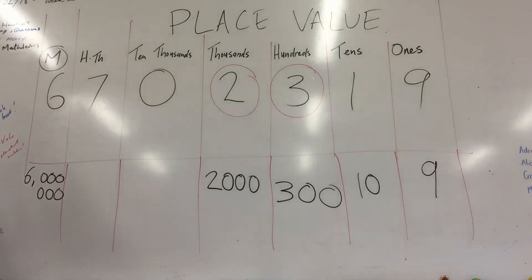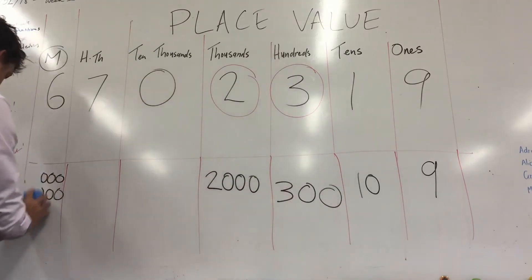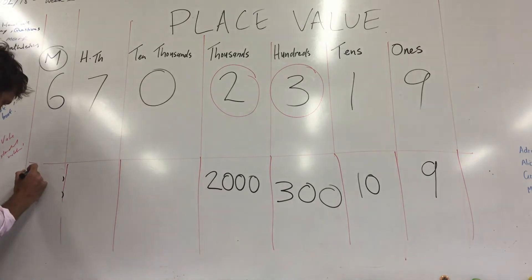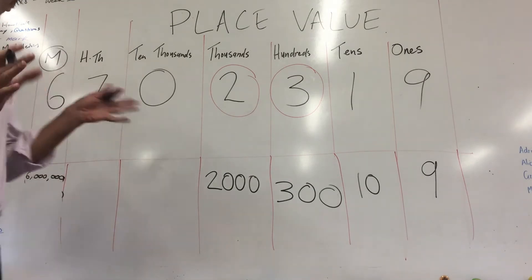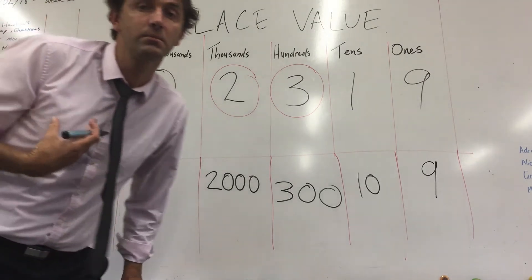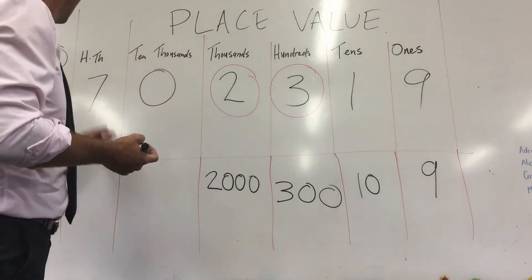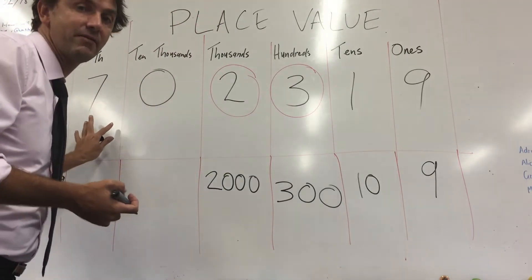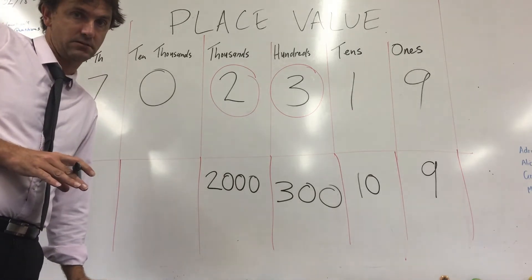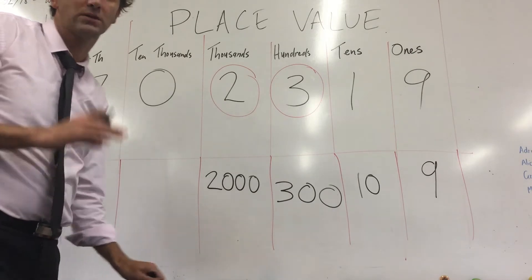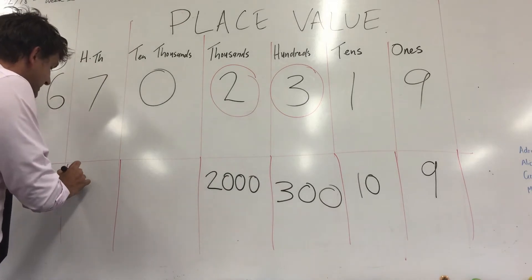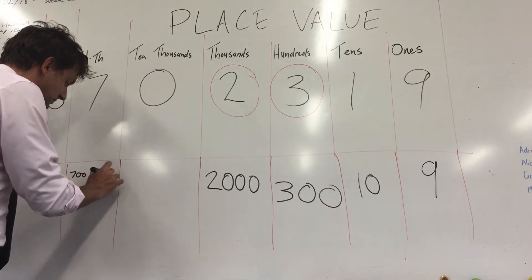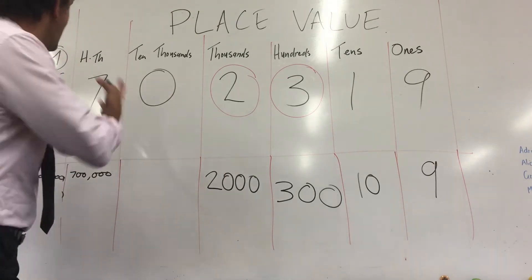Six million — that's a big number. Can you tell me what this seven is equal to? It's in the hundred thousands column. What's the seven equal to? It's equal to seven hundred thousands, because it's dealing with hundred thousands.